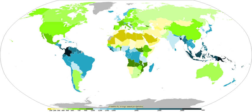Smaller drops are called cloud droplets, and their shape is spherical. As a raindrop increases in size, its shape becomes more oblate, with its largest cross-section facing the oncoming airflow. Contrary to cartoon pictures of raindrops, their shape does not resemble a teardrop. Intensity and duration of rainfall are usually inversely related — high-intensity storms are likely to be of short duration and low-intensity storms can have a long duration. Raindrops associated with melting hail tend to be larger than other raindrops.